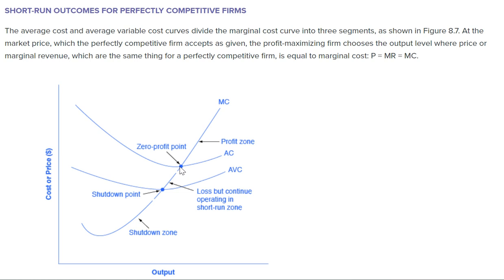They're dead even. Above that is called the profit zone — everything you make above that is considered your profit. Graphically, if you want to look at and examine your profit, this is how you would do it. However, the distance between the zero profit point — which is the AC intersecting the marginal cost — this area in here is your area of loss. But you can still continue operating in the short-run zone, as we talked about in the three previous examples. This is considered your short-run zone: the difference between average variable costs and average costs as they intersect the marginal cost line.